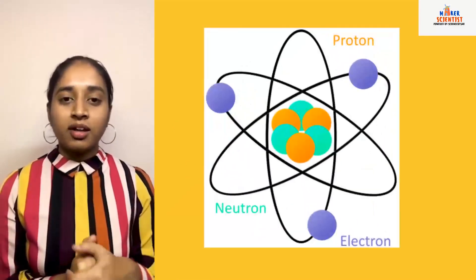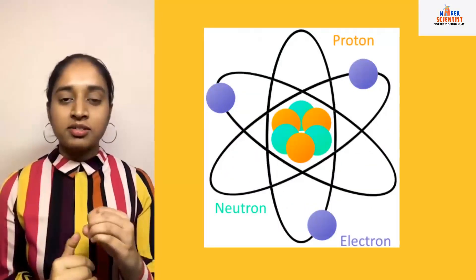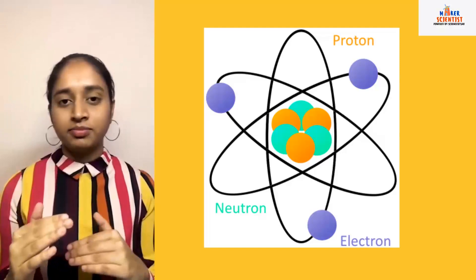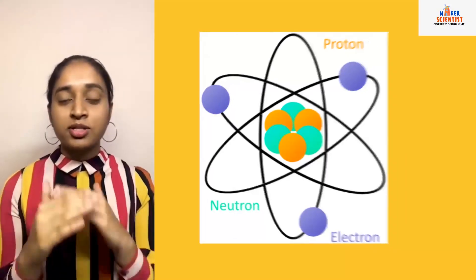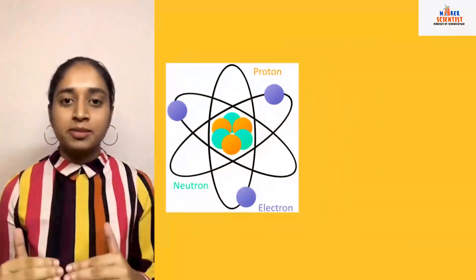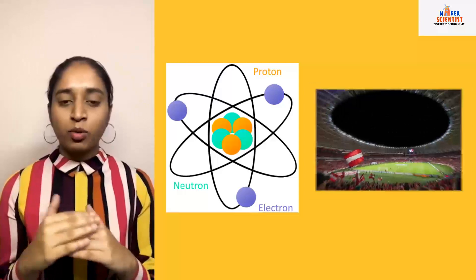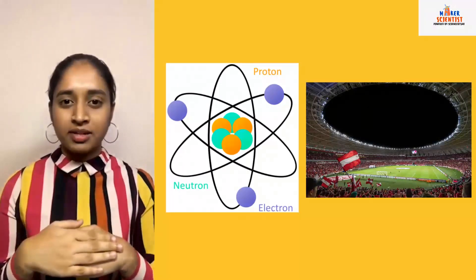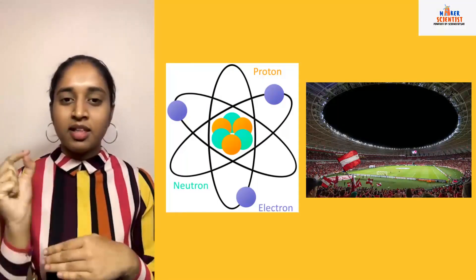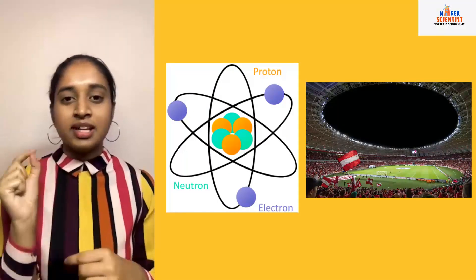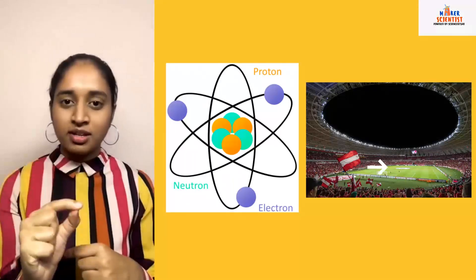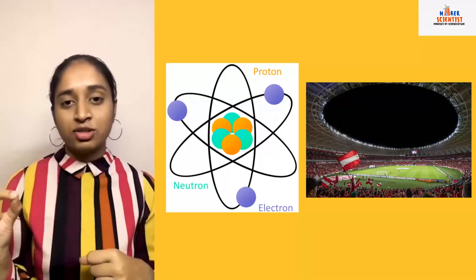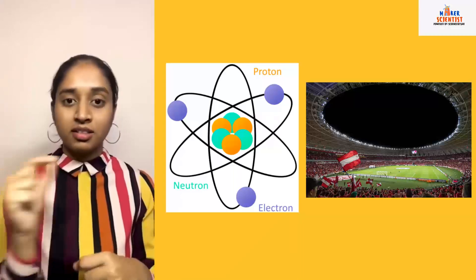Now we know that an atom consists of a nucleus with electrons revolving around it, but you'll be surprised to know that it's mostly empty space. If you consider a sports stadium as being like an atom, then the nucleus is like a pea in the center of the stadium and the electrons are like the grains of sand in the seats.